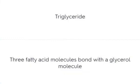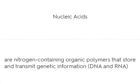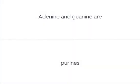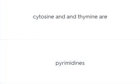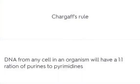A triglyceride consists of three fatty acid molecules bonded with a glycerol molecule. Nucleic acids are nitrogen-containing organic polymers that store and transmit genetic information. Adenine and guanine are purines. Cytosine and thymine are pyrimidines. Chargaff's rule states that DNA from any cell in an organism will have a 1:1 ratio of purines to pyrimidines.